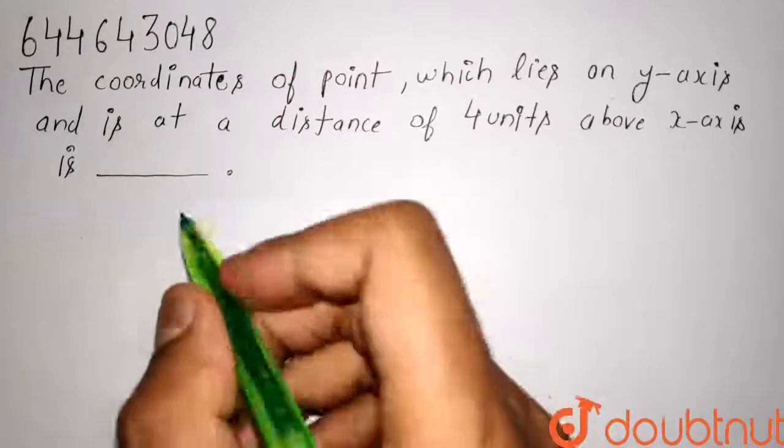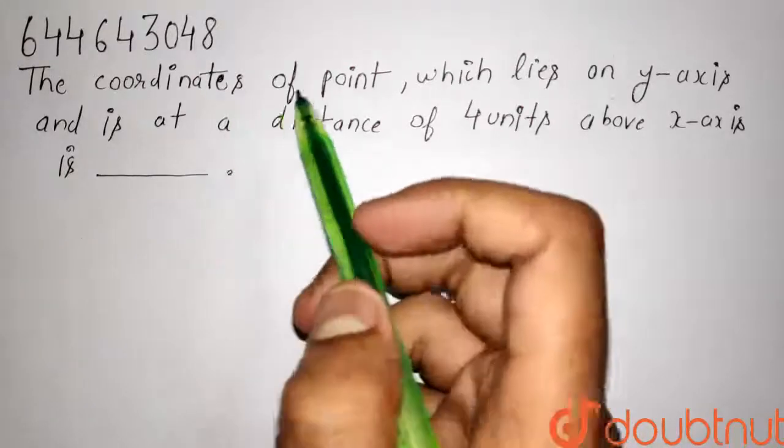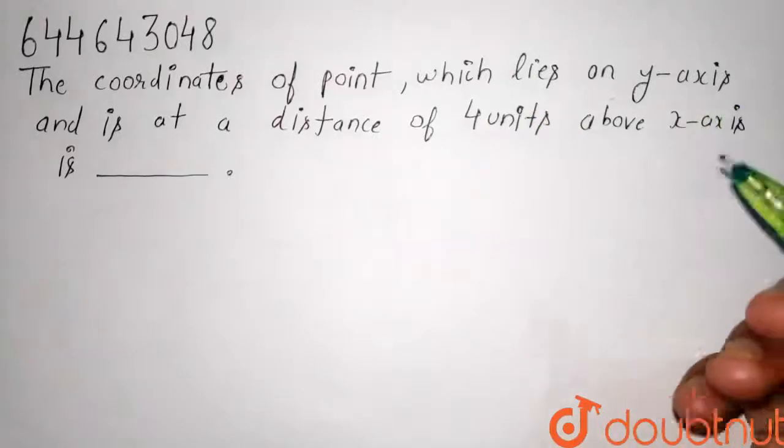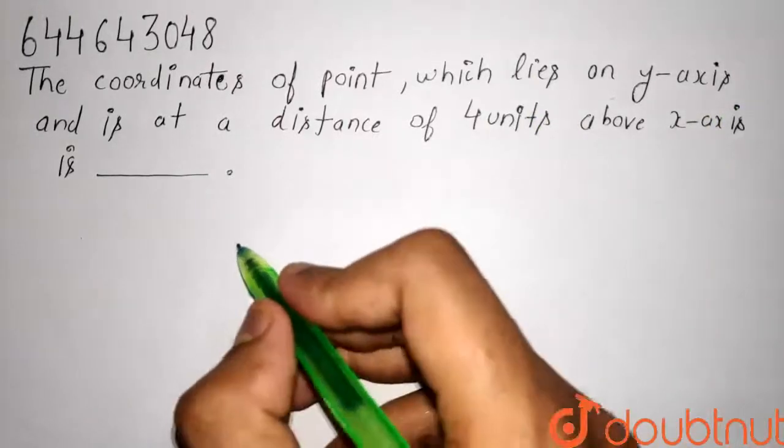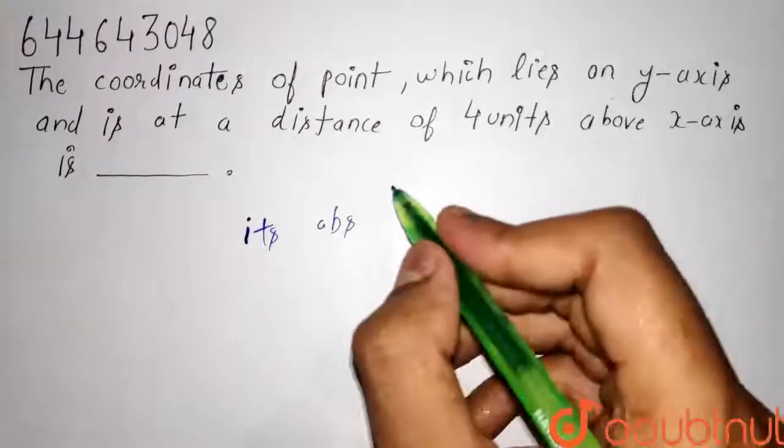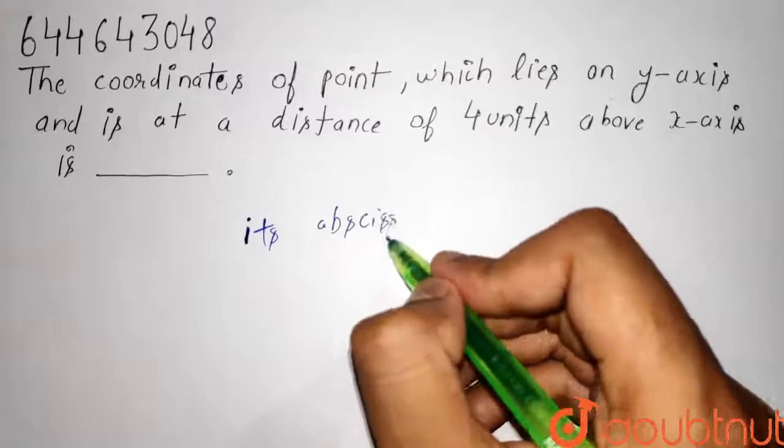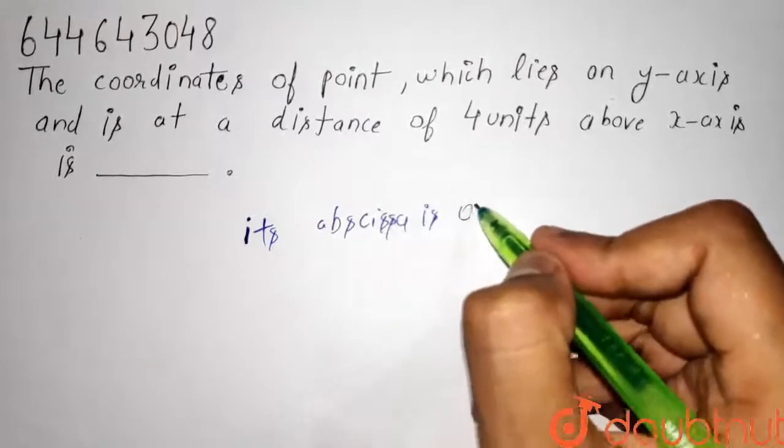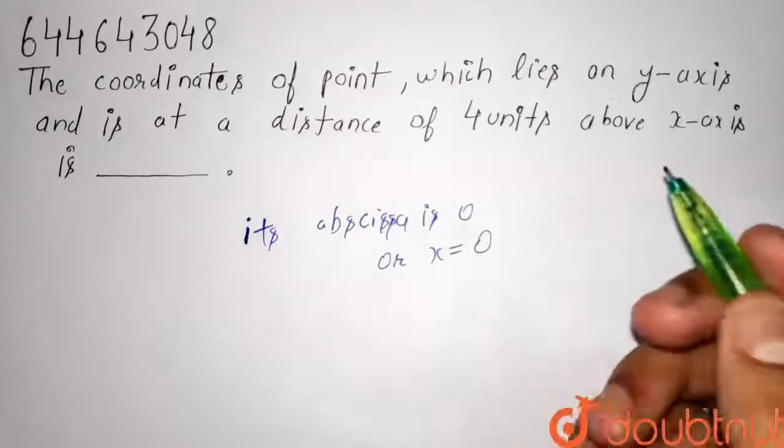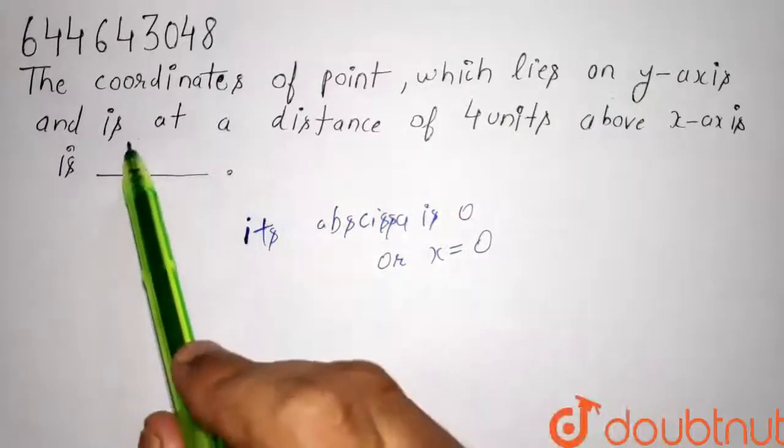So it is given in the question that the point which lies on y-axis, so its abscissa is 0, or you can say x is equal to 0, and it is also said that